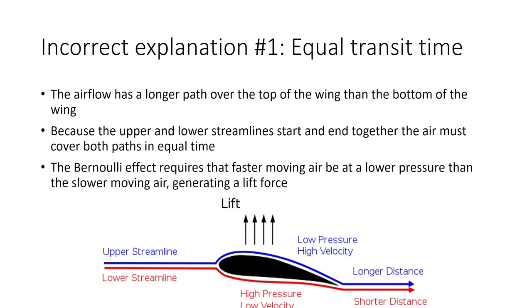The first incorrect explanation is the equal transit time explanation. In this explanation, people say that the airflow going over the top of the wing has a longer distance to travel than the airflow going underneath the wing. And because both airstreams take the same amount of time to cover the distance, the air going over the top of the wing must be moving faster. Then the Bernoulli effect requires that faster moving air be at a lower pressure than the slower moving air, generating a lift force. This explanation seems superficially correct, but it has some problems.